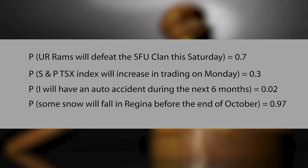The subjective or judgmental method means making your best guess of the likelihood of an event based on reliable information and good judgment — inform yourself about the issue or discuss it with someone knowledgeable. Probability is a number between 0 and 1 representing your degree of belief the event will occur. Probability of E close to 0 implies the event is unlikely to occur; close to 1 implies the event is quite likely to occur. Examples: probability of having an auto accident in the next six months is 0.02; probability of some snowfall in Himachal or Kashmir before the end of October is 0.97.